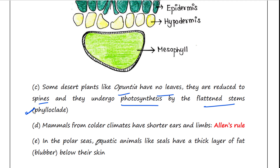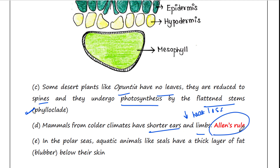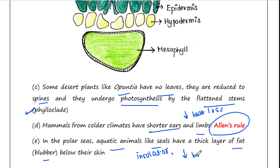Mammals from colder climates have shorter ears and shorter limbs to minimize heat loss. This is called Allen's rule. In polar seas, aquatic animals like seals have a thick layer of fat called blubber below their skin, because it acts as an insulator and reduces the loss of body heat.